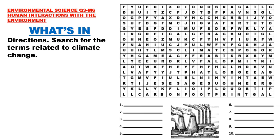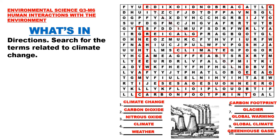What's In? Directions: Search for the terms related to climate change. The different words that can be found in our puzzle are: climate change, carbon dioxide, nitrous oxide, climate, weather, carbon footprint, glacier, global warming, global climate, and greenhouse gases.